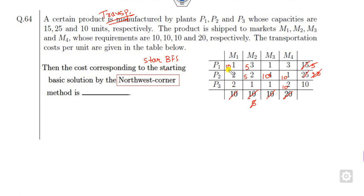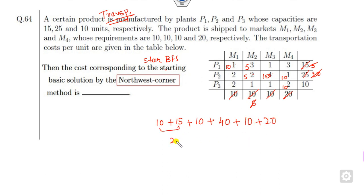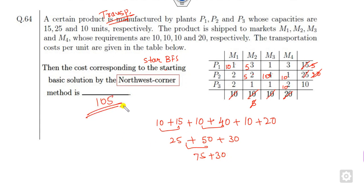The cost calculation: 5×15 = 25 (but using allocated values), 2×5 = 10, 10×4 = 40, 10×1 = 10, and 2×10 = 20 (noting the allocations). Totaling: 75 plus 30, the right answer is 105.